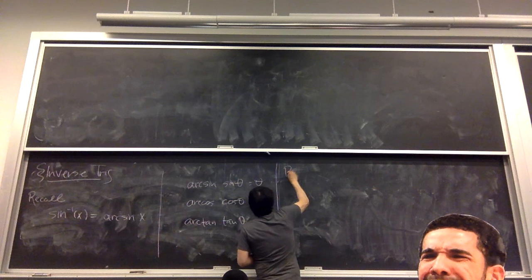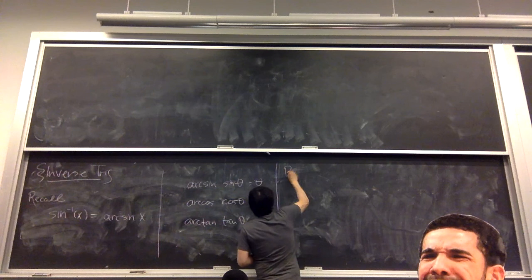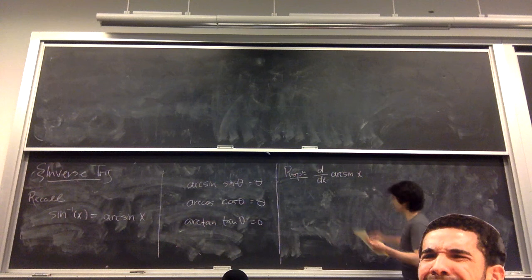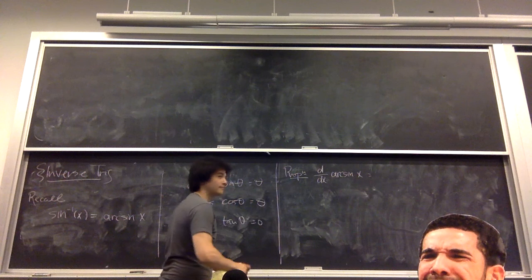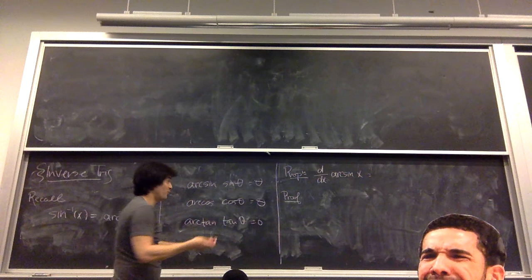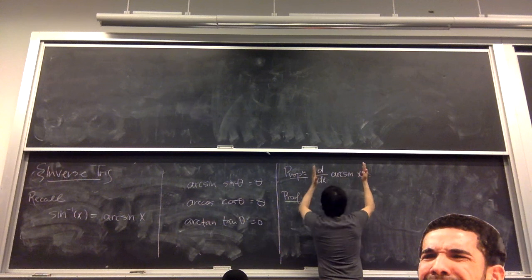Okay, so let's try to figure out what is the derivative of arc sine of x. Does anyone know what it is from memory? No, it doesn't matter. We'll work it out. So proof. Anyone have any good starting points? So what did I tell you? This is the inverse function, right? So what do I want? I want the derivative of the inverse function at x. So what is the rule for this that I just taught you?